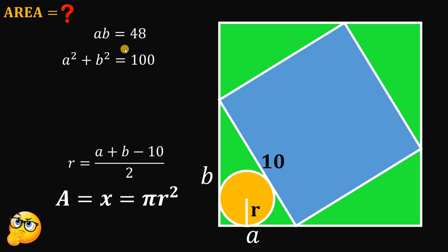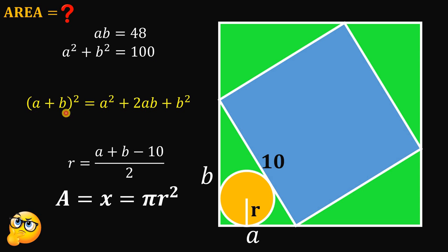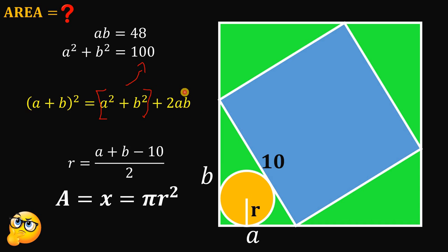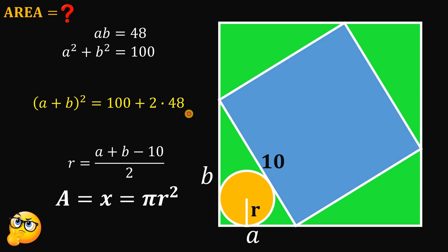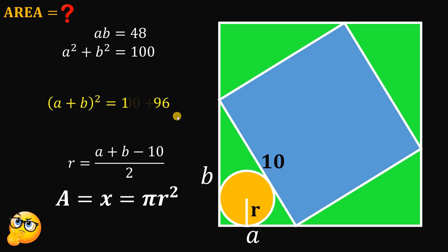Now we know that AB equals 48 and A squared plus B squared equals 100. Using the algebraic identity: A plus B, raised to the power of 2, equals A squared plus 2AB plus B squared. Rearranging terms, we see A squared plus B squared, which equals 100, and 2AB, where AB equals 48. So we replace A squared plus B squared with 100, and AB with 48. Then 2 times 48 gives us 96, and 100 plus 96 equals 196.